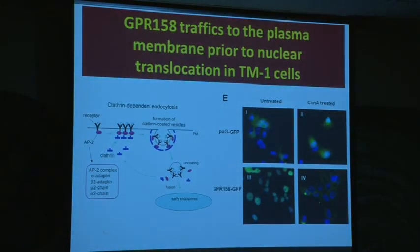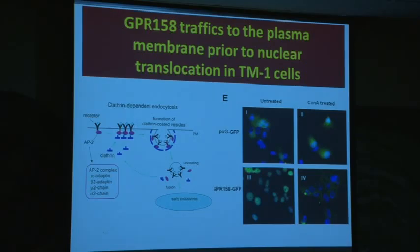We did an experiment to see whether the gene would actually get to the plasma membrane first and then go to the nucleus after. It seems that is the case. This shows a diagram of typical clathrin-dependent endocytosis — a protein would traffic to the plasma membrane, then be recycled into clathrin vesicles and move inside the cell, and from there go to the nucleus if it had a nuclear localization signal, which was found in our receptor.